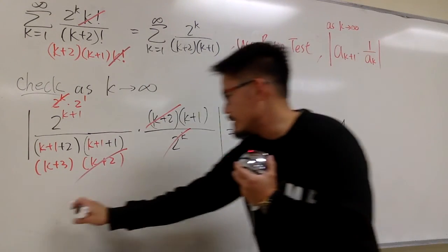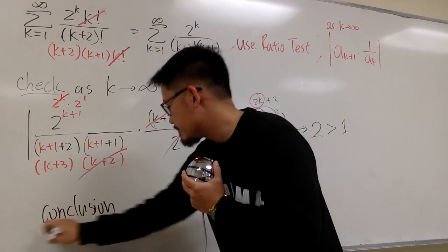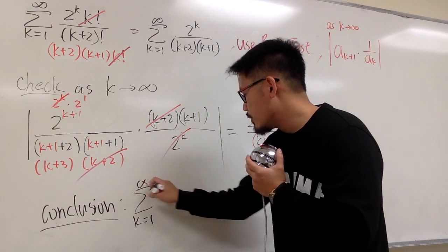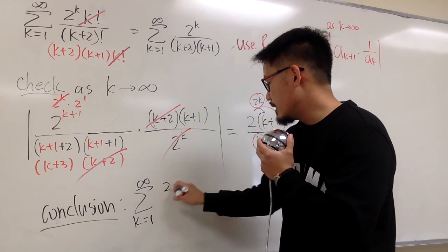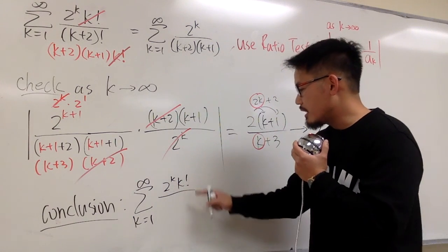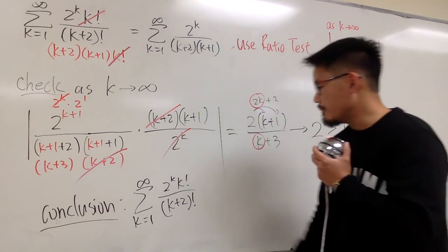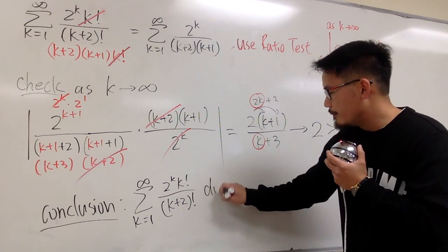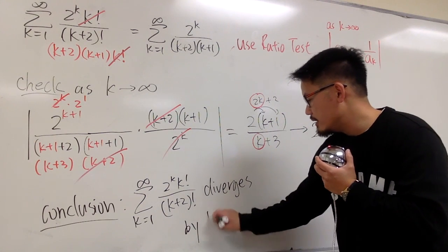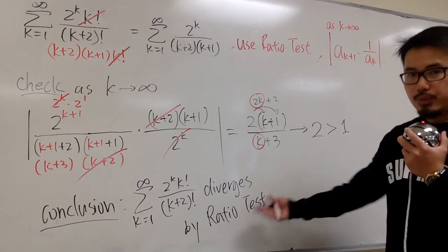So let me put this down right here. Here is the conclusion. The original series, sigma when k goes from 1 to infinity, let me put on the original before we simplify, which is 2 to the k times k factorial over k plus 2 in the parentheses factorial, this right here diverges by the ratio test. And then we are done.